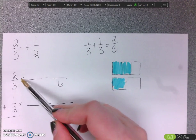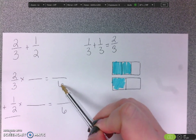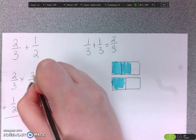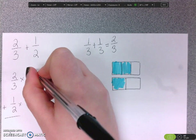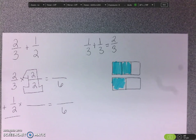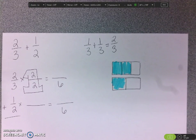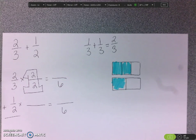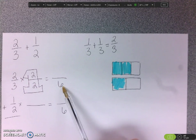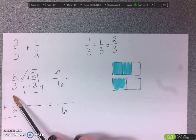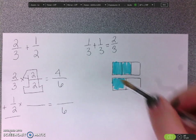Okay, so three times what gives you six? Well, that will be three times two. And I always say what you do to the bottom, you have to do to the top, because that is the same as multiplying by one whole. And we know that when you multiply anything by one, it doesn't change the value of the fraction, it just kind of changes what it looks like, because that's the identity property of multiplication. So we did three times two is six. Now you can do the top, two times two is four. So two-thirds is the same thing as four-sixths.